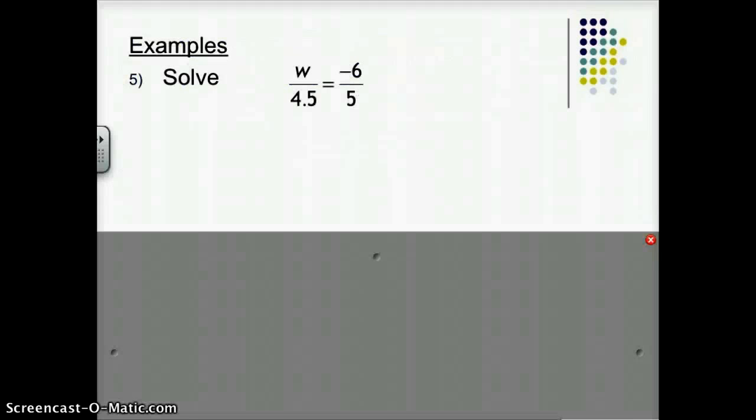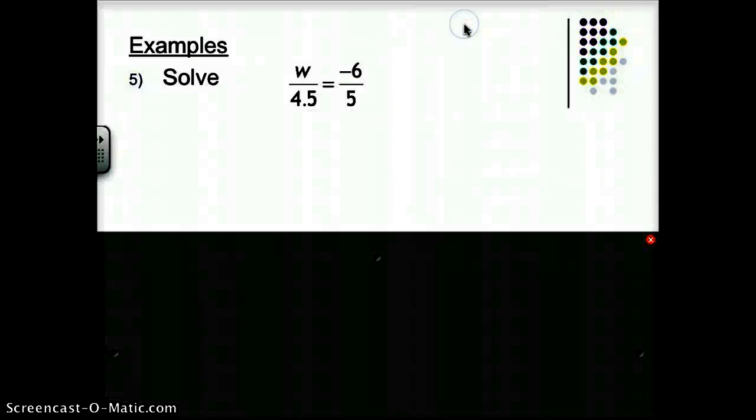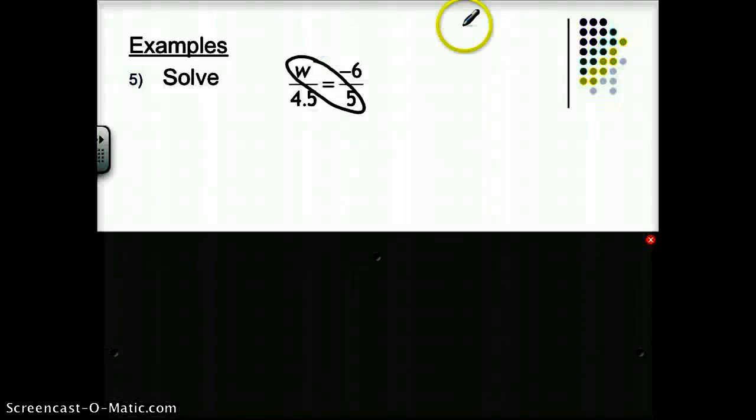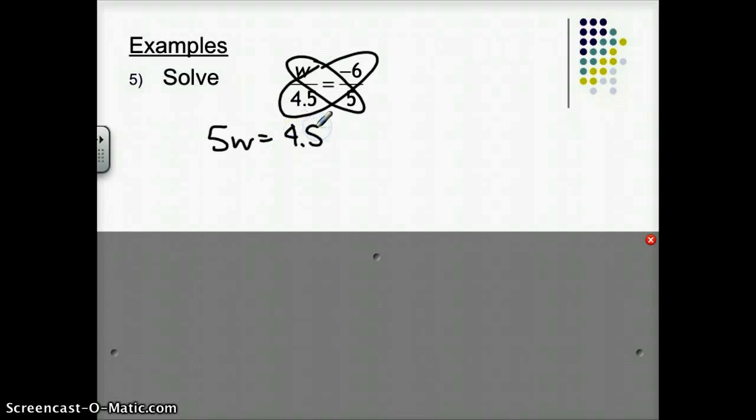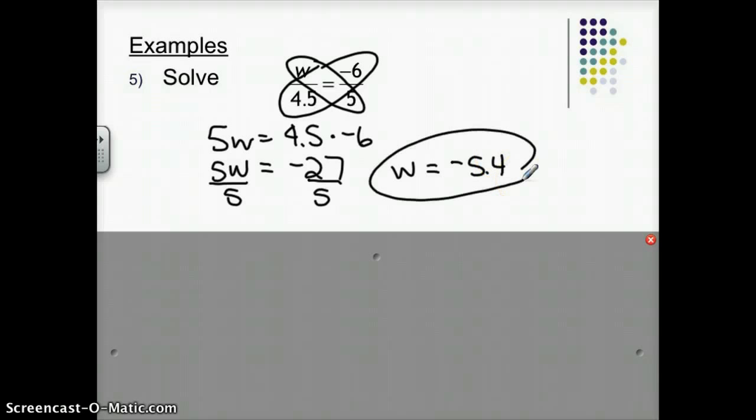And we're going to use that skill to solve a couple proportions. I don't want you to forget about using scale factor and some of the other techniques that we talked about in the past, but I want you to work on this a little bit, too. So this would say that 5 times W, and I'm going to write that as 5W, equals the same thing as 4.5 times negative 6. And our job is to solve this equation for W. So it's good because we've practiced solving equations before. And 4.5 times negative 6, that's negative 27. So that equals 5W. I'm going to divide it by 5 to get my answer that W equals negative 5.4. And it's always smart to check. I'm going to let you try that one on your own to check it and make sure it works.